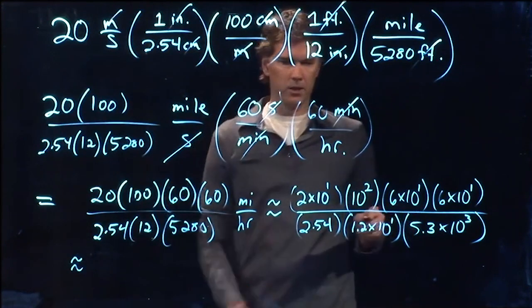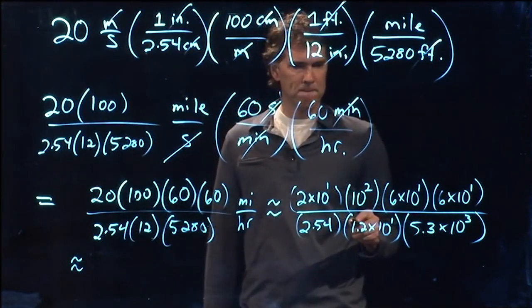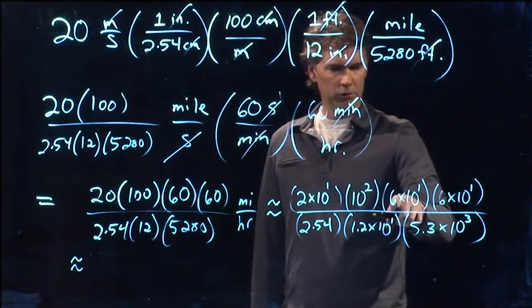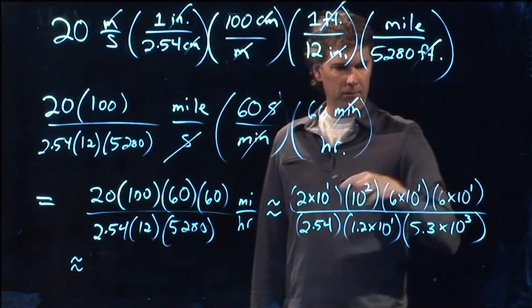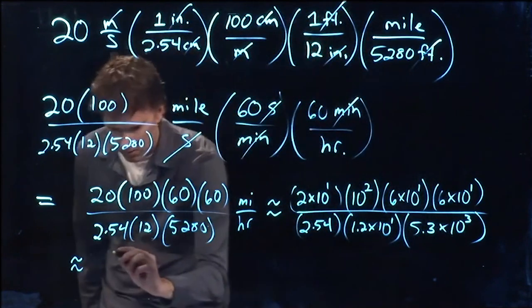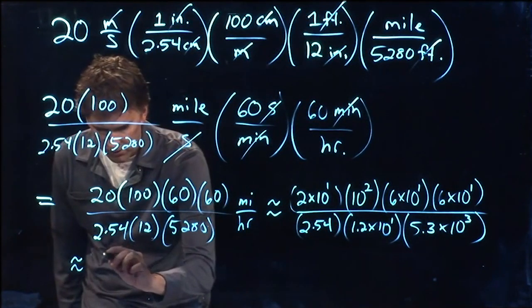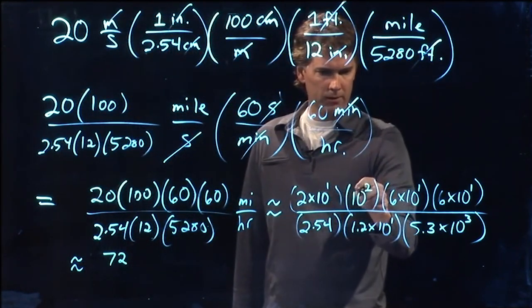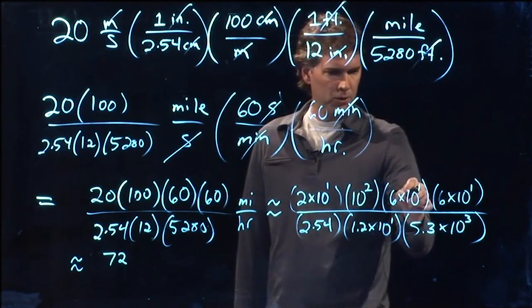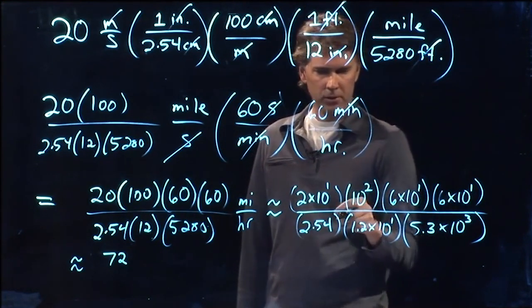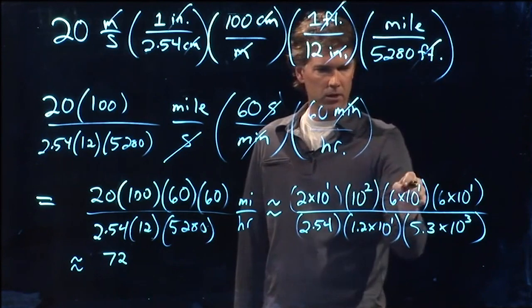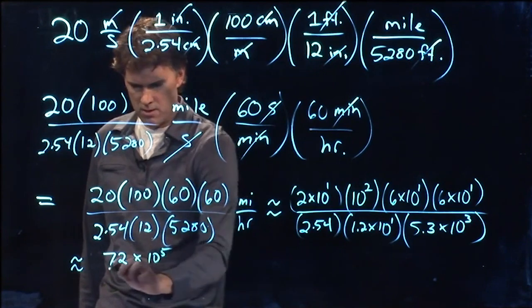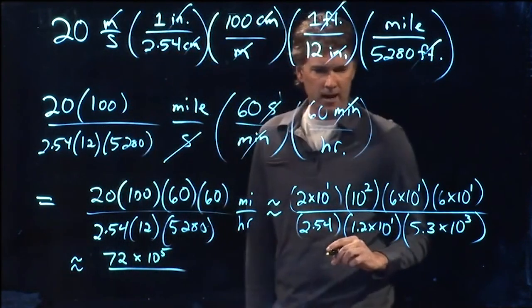And while I'm doing this, maybe you guys could plug it into your calculator and just see what you get. So we've got a 2 times a 6, which is 12. And 12 times 6 is 72. And then we've got a 10 to the 1. We're going to add another 2 there, another one there, another one there. And so we just count up the 0s. 1, 2, 3, 4, 5. 72 times 10 to the 5 upstairs.